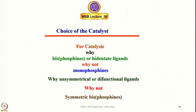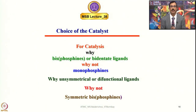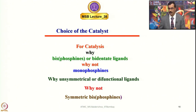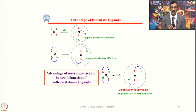I was telling about the choice of catalyst and for catalysis why we prefer bidentate ligands. Even when you have bidentate ligands, why we prefer unsymmetrical bidentate ligands or difunctional ligands having hemi-labile nature or of hybrid nature. Now let me show you what I showed you, and also the advantage of bidentate ligands versus monodentate ligands.